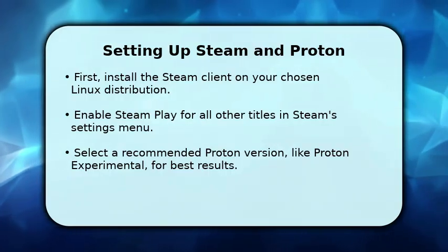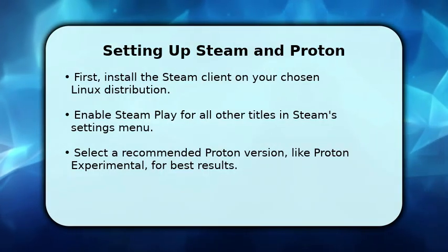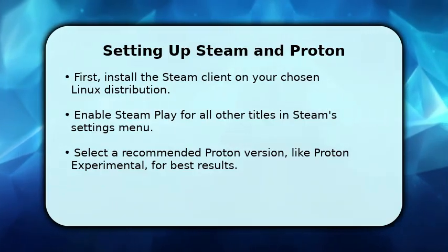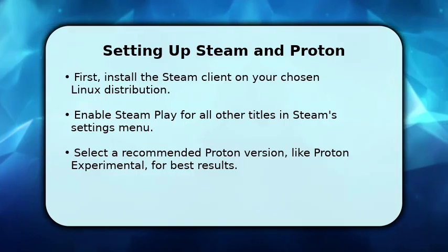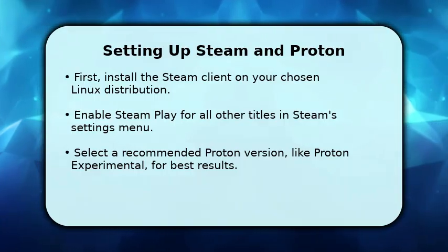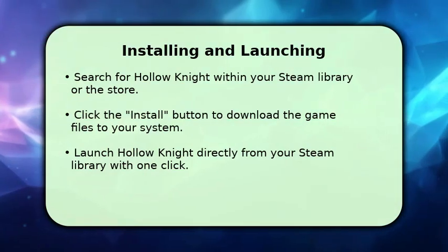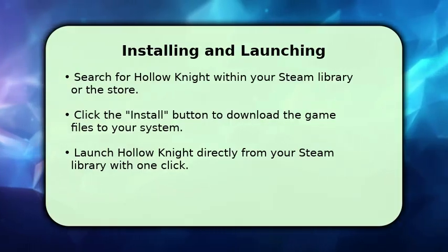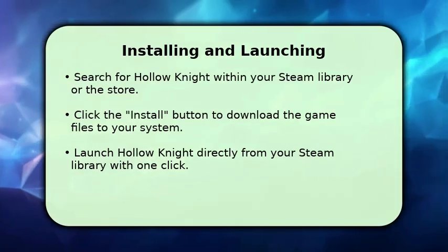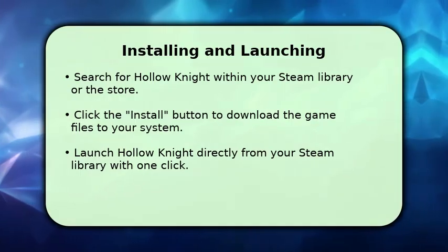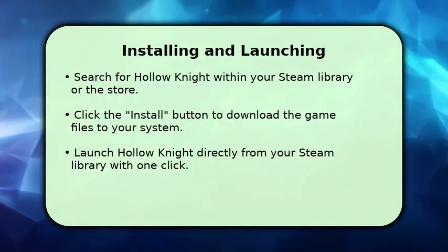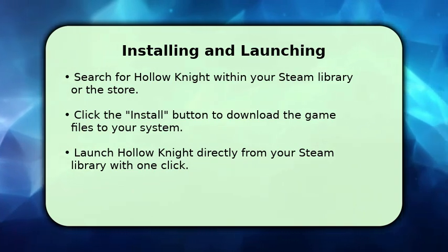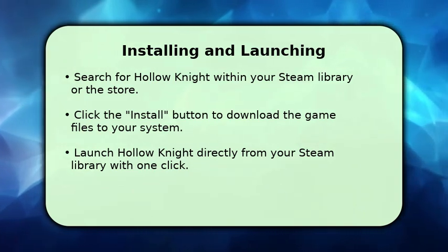It is often best to select a specific Proton version, such as Proton Experimental, to ensure optimal compatibility and performance for your games. With Steam Play configured, installing Hollow Knight is just like installing any other game. Simply search for Hollow Knight in your Steam library or the Steam store. Once you find it, click the Install button to begin the download.